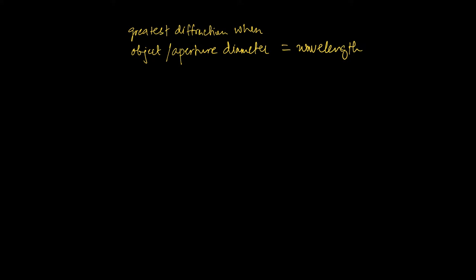Later on tonight, go look at a distant street light and make a narrow gap through your fingers, as narrow as you could make that gap. You will see diffraction. You might see the street light looking a certain way when you have a large opening between your fingers, but over time you're going to see rays coming out — that is an example of diffraction happening.